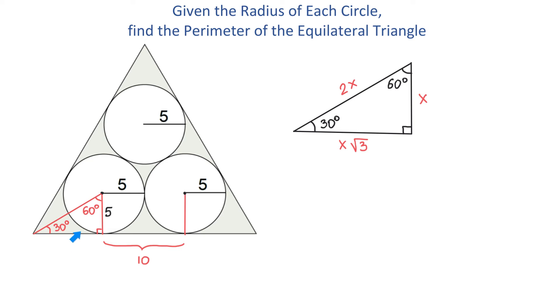In our case, the right side is 5, so the bottom side will be 5 times square root of 3. If this line segment is 5√3, then this one is also 5√3 by symmetry.